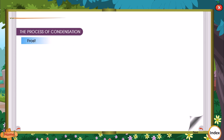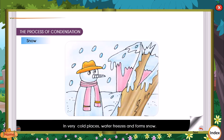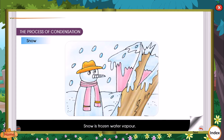Frost: Water vapour freezes on cold objects into ice crystals in very cold nights. Snow: In very cold places, water freezes and forms snow. This happens because of extremely cold weather. Snow is frozen water vapour.